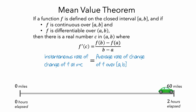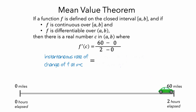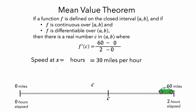In this scenario, the average rate of change of f is the car's average speed over its entire drive. So a is equal to 0 hours, b is equal to 2 hours, f of a is equal to 0 miles, and f of b is equal to 60 miles. And this average speed is 30 miles per hour. So the mean value theorem is saying that there is some moment in time between 0 and 2 hours when the speed of the car at that moment is equal to exactly 30 miles per hour.